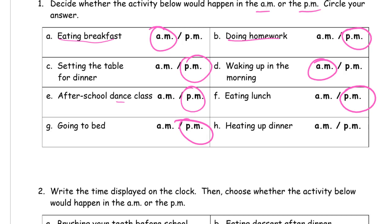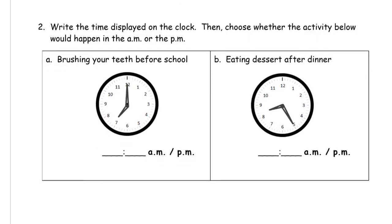Heating up dinner, that's eating leftovers or something for dinner, so that dinner is usually evening, that's p.m. Write the time displayed on the clock, then choose whether the activity below would happen in the a.m. or the p.m. So we're looking at the clock, we're writing down the time, and we're circling either a.m. or p.m., so brushing your teeth before school.